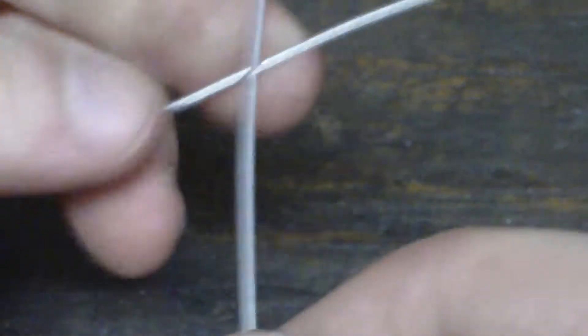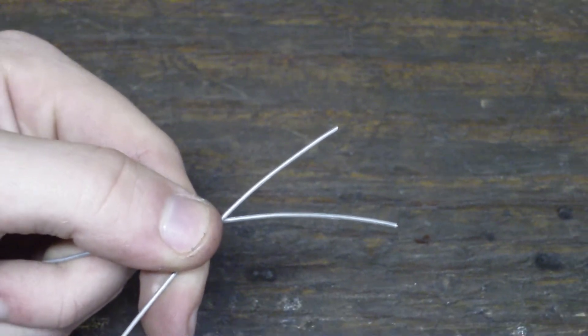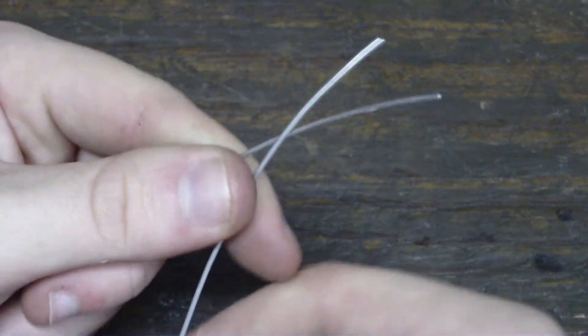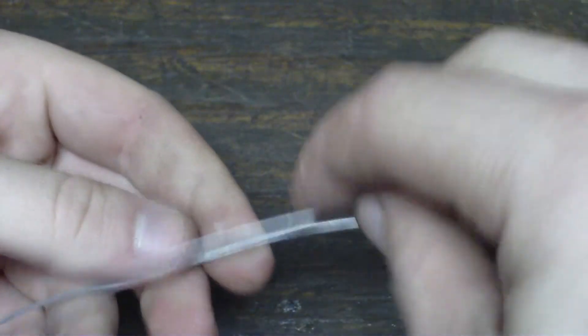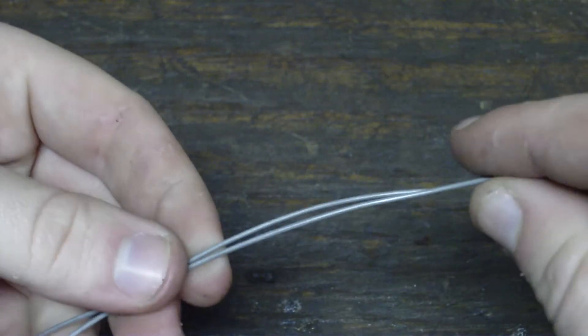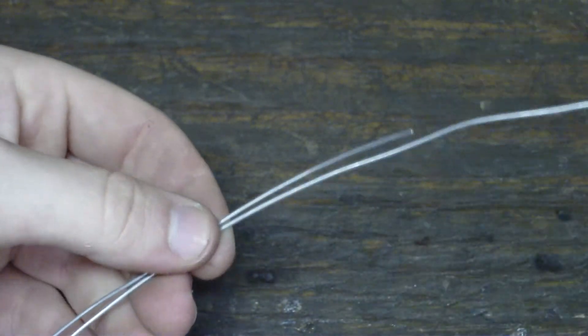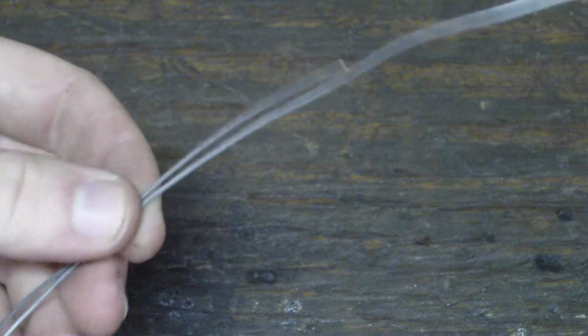Now I'm going to show you how you do splicing on bigger wires. This is an old technique. It's not used very much anymore. Instead of just twisting them together like I did on the resistors, back in the old days when they had telegraphs, they did what they called a Western Union splice.